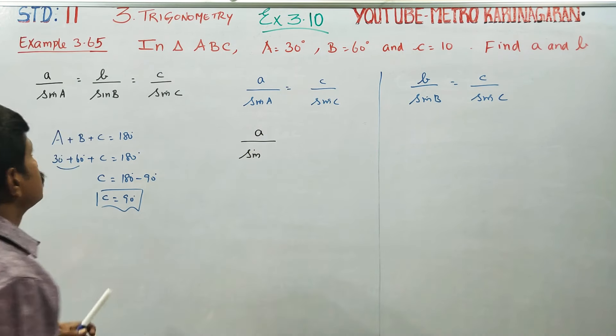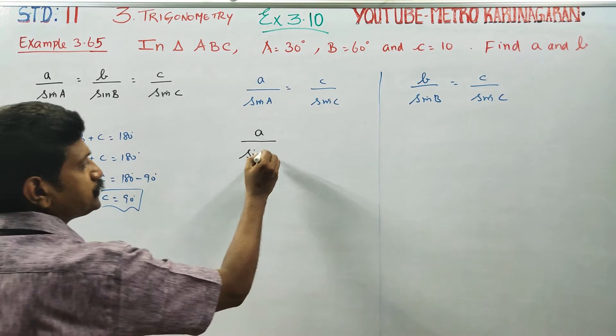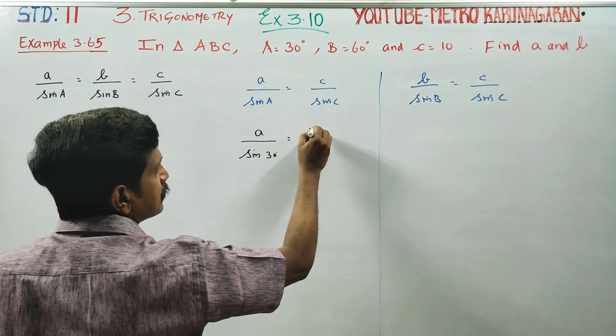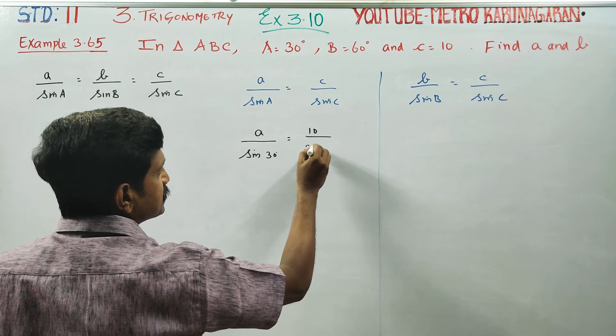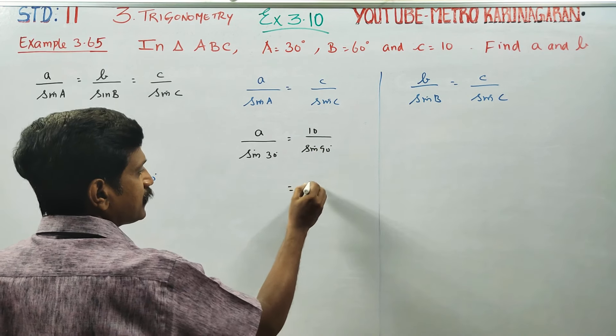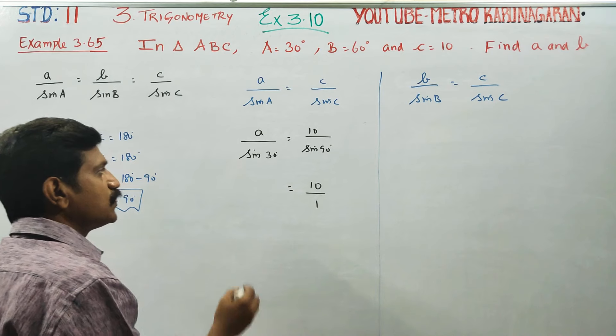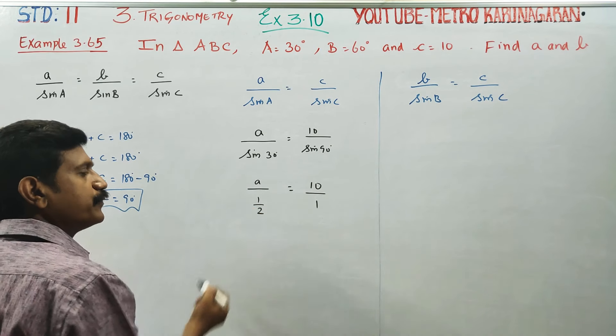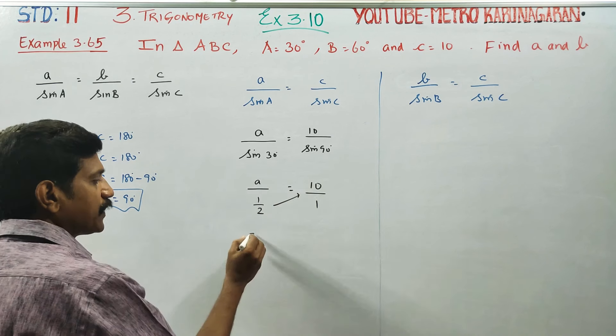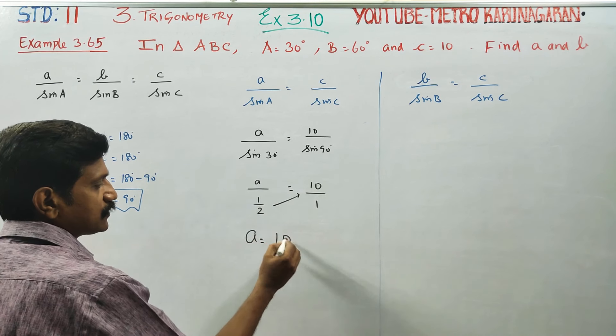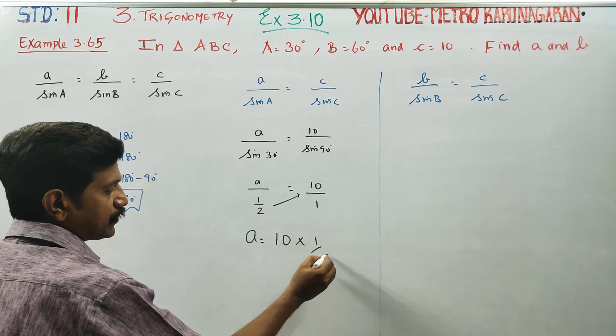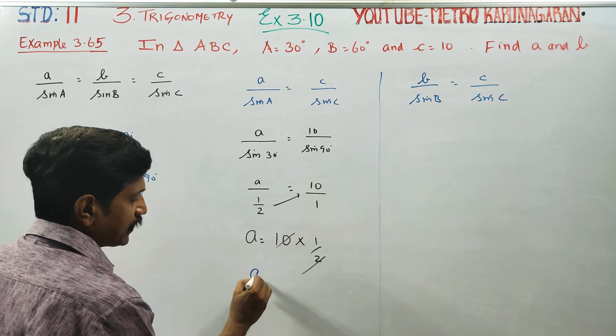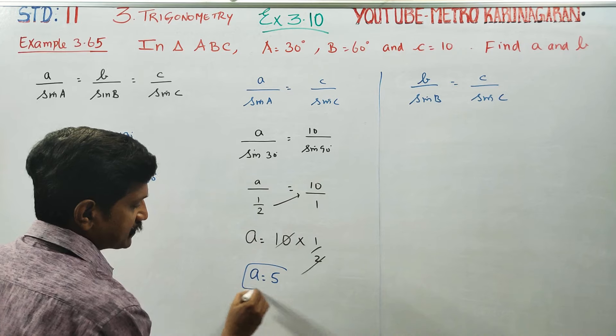a/sin 30° = 10/sin 90°. So a = 10 × (1/2) = 5. Side a equals 5. The first answer is ready.